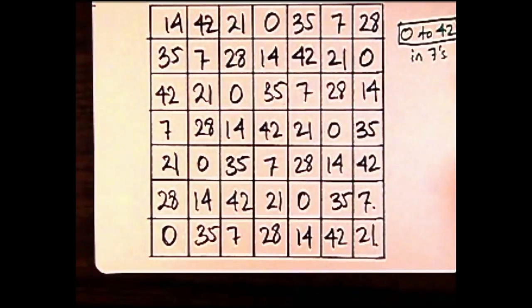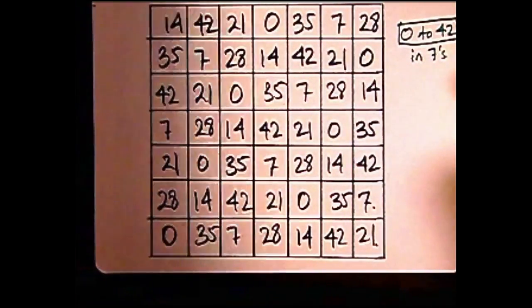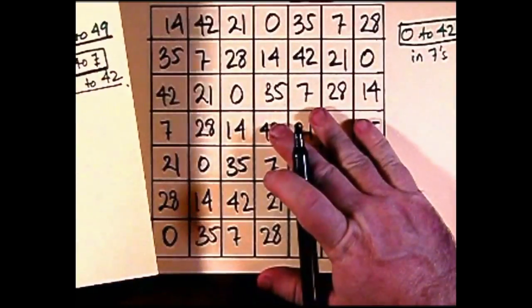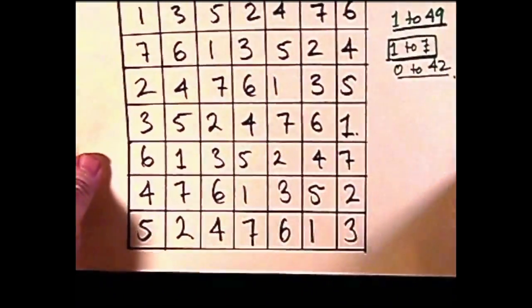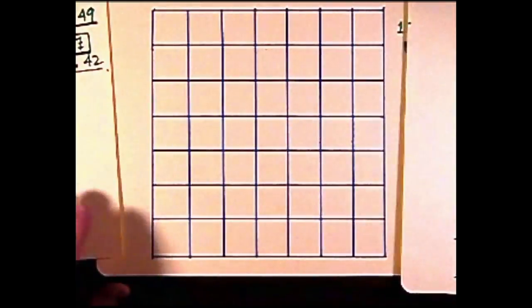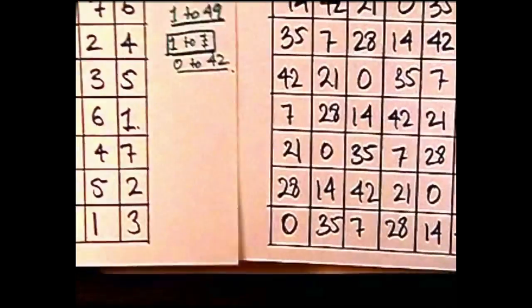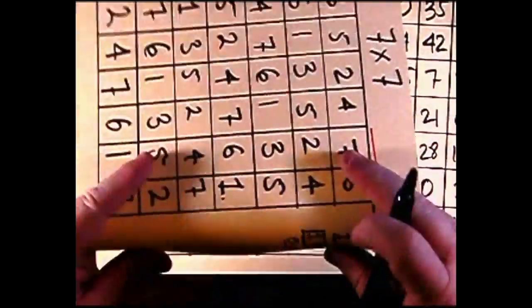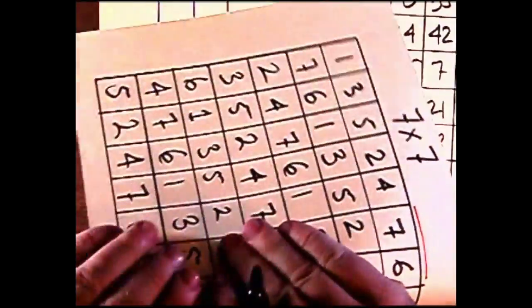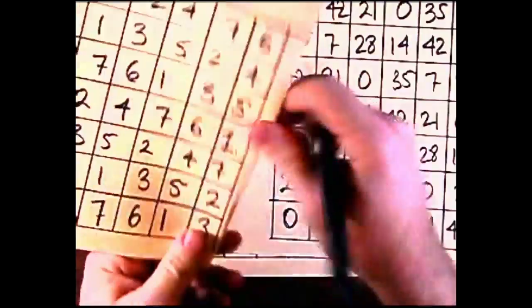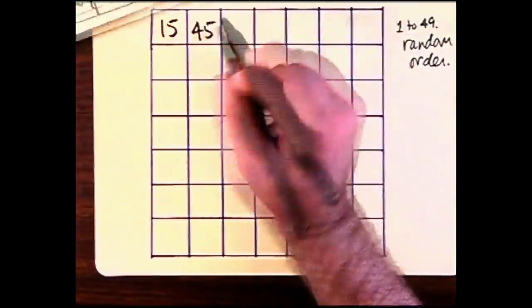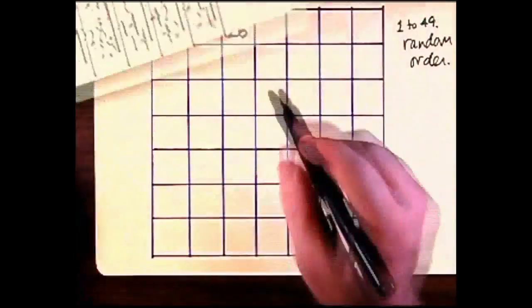What we're going to do now is add the first square to the second square and put the results of that addition into a third square. This is exactly like matrix addition. What I'm doing right now is folding up a sheet of paper, folding it up just so that I can easily read both magic squares. As you can see here, I'm adding numbers.